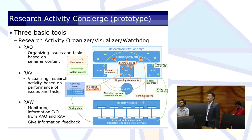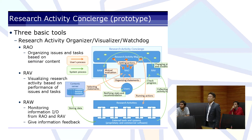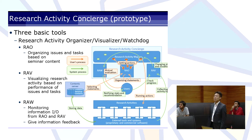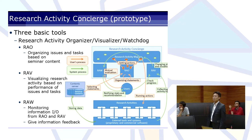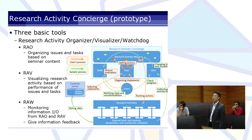We prototyped a system called Research Activity Consortium. This system consists of three basic tools: Research Activity Organizer (RAO), Research Activity Visualizer (RAV), and Research Activity Watchdog (RAW). RAO is a tool for organizing issues and tasks based on seminar content. RAV is a tool for visualizing research activity based on performance of issues and tasks. RAW is a tool that constantly monitors information I/O from Organizer and Visualizer, and is also used to give information feedback.